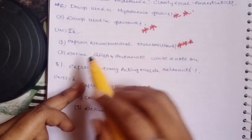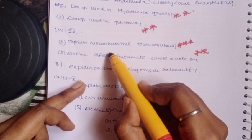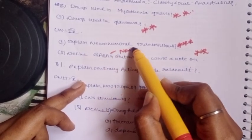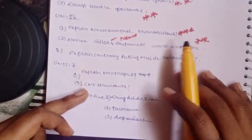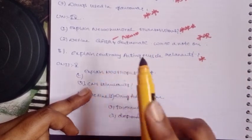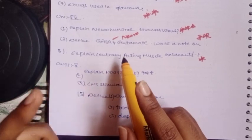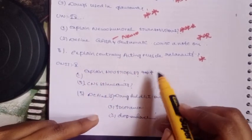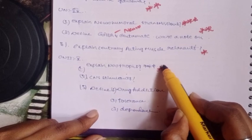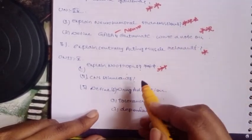Neurohumeral transmission - very important. Define GABA and glutamate. You can explain neurotransmitters, centrally acting muscle relaxants, and skeletal muscle relaxants. Meanwhile, central muscle relaxants and neuromuscular blocking agents - you should choose which question to answer.